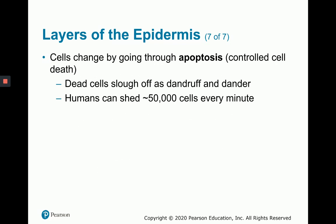The cells that are sloughed off actually go through apoptosis, or controlled cell death. The cells that slough off are truly dead — not only has their nucleus degenerated, but many of their organelles have as well. This breakdown of cellular components is initiated through apoptosis. The dead cells that slough off as dandruff and dander have gone through apoptosis. We actually shed about 50,000 cells every minute.